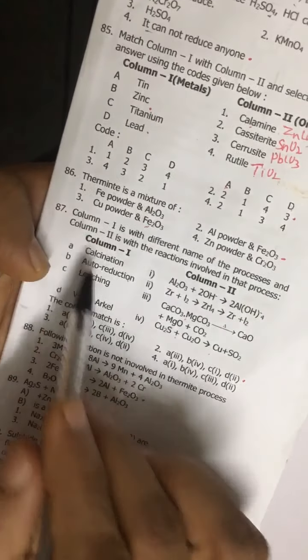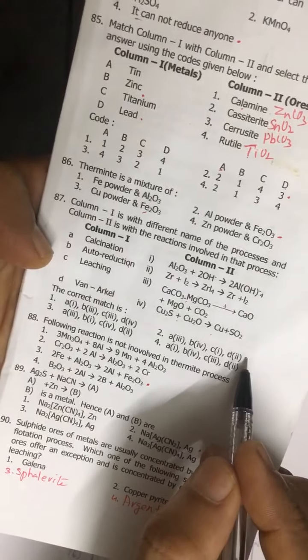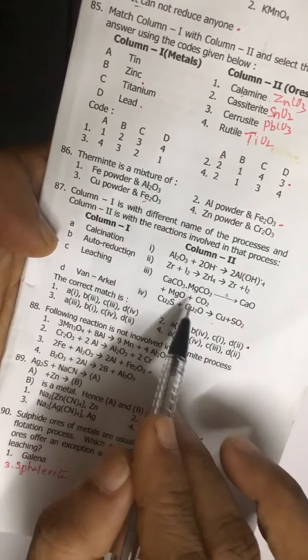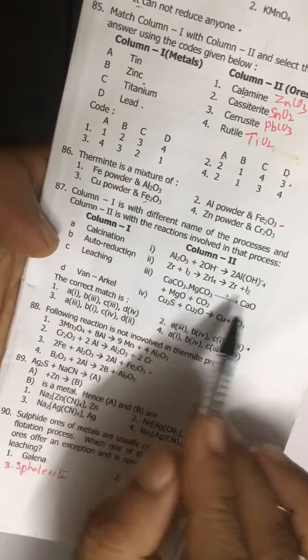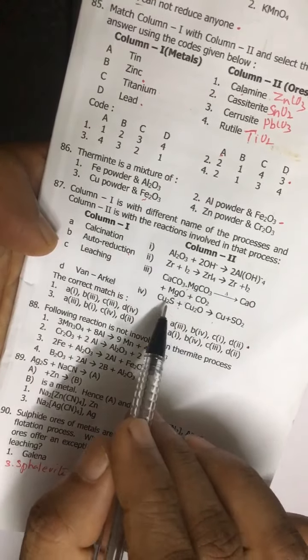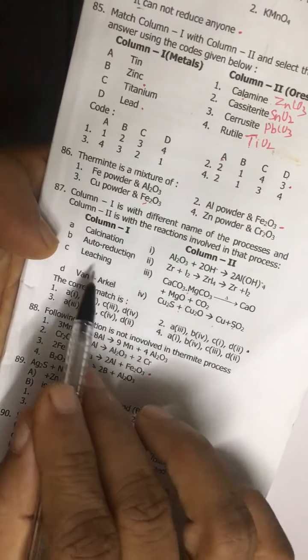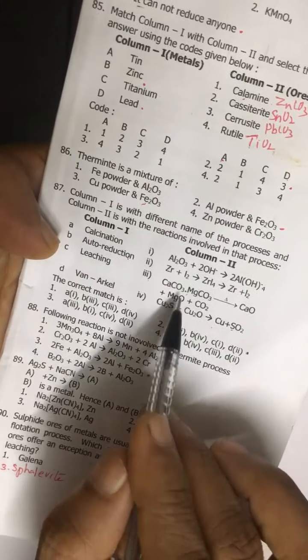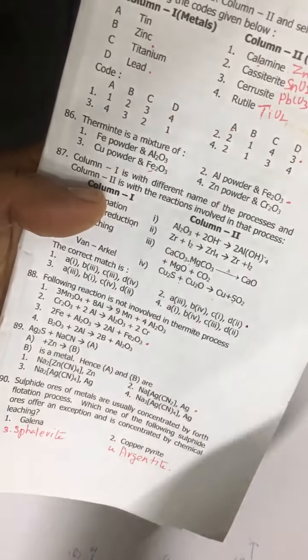Question number 87: correct answer is second option. That is, calcination is simply conversion of any carbonate into oxide ore. That is this one: auto-reduction - metal oxide plus metal sulfide, they give metal. Leaching - leaching is this process, that is purification of, or concentration of bauxite.